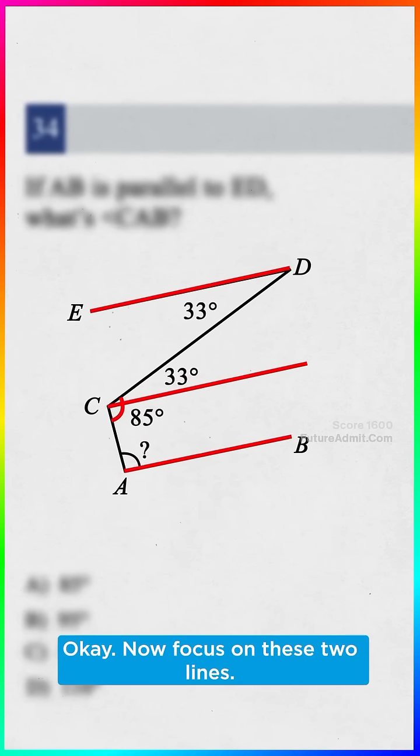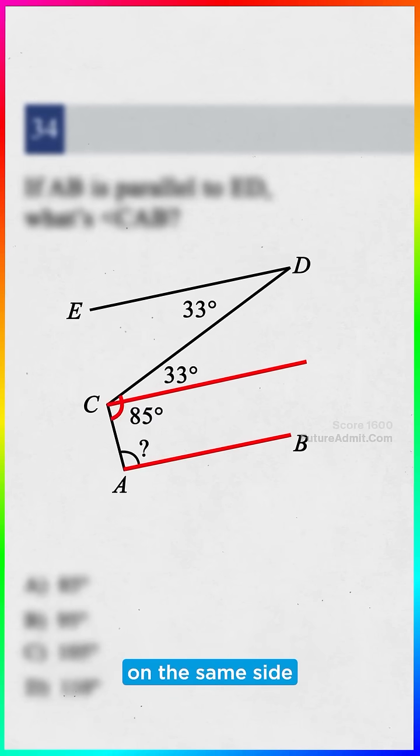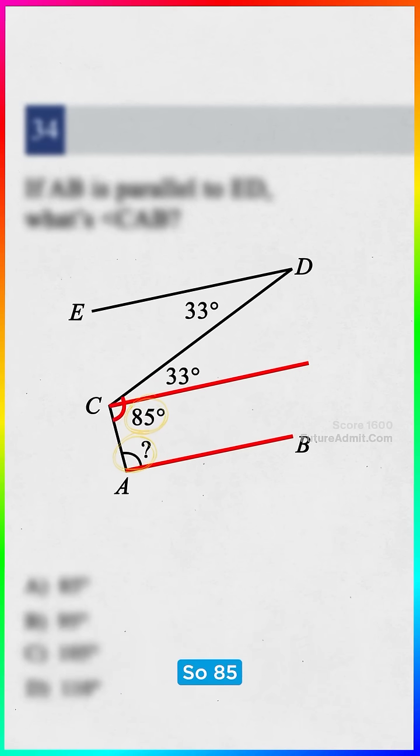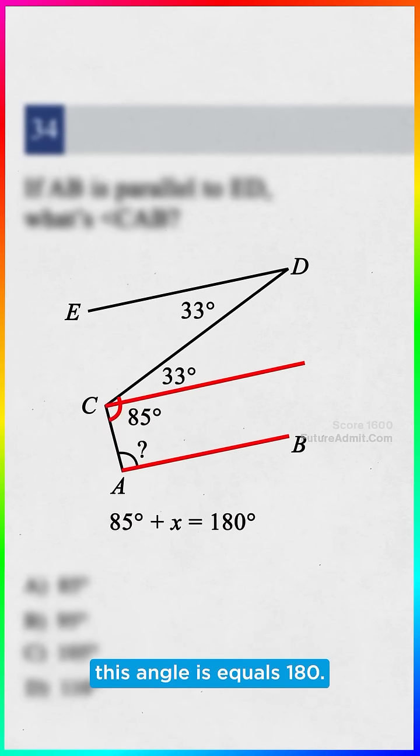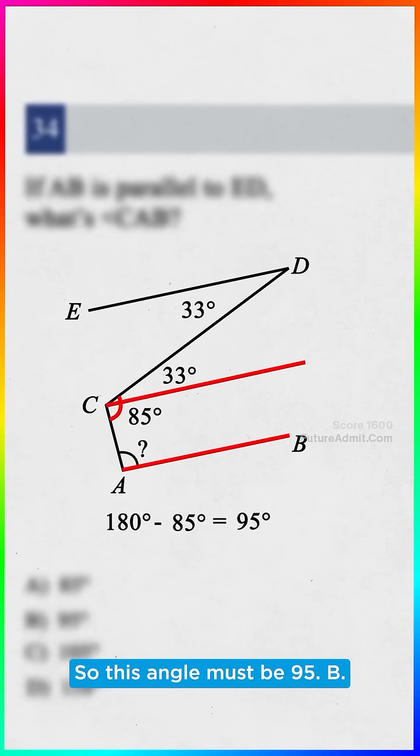Okay, now focus on these two lines. Parallel lines cut by a transversal also create supplementary angles on the same side. AKA these must add up to 180 degrees. So 85 plus whatever this angle is equals 180. Subtract the 85, so this angle must be 95.